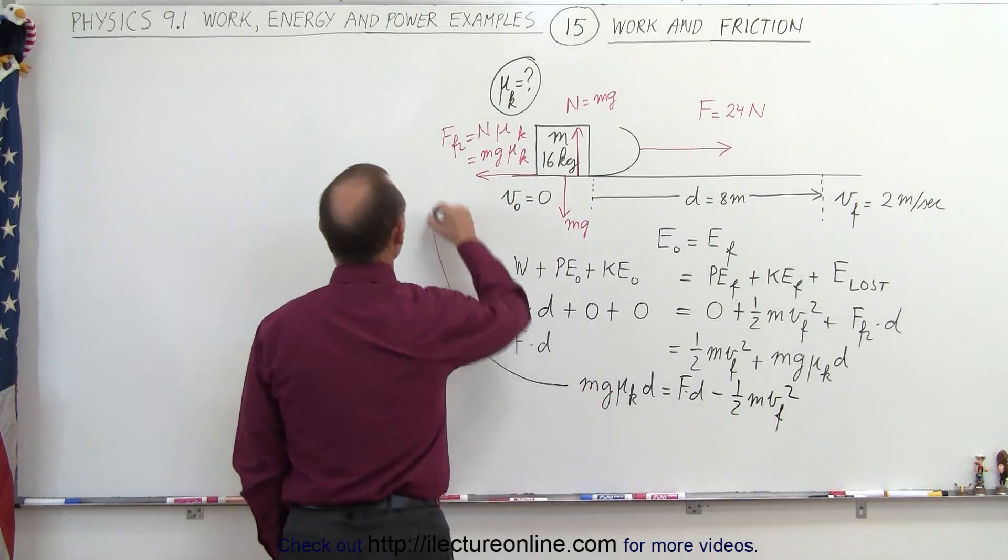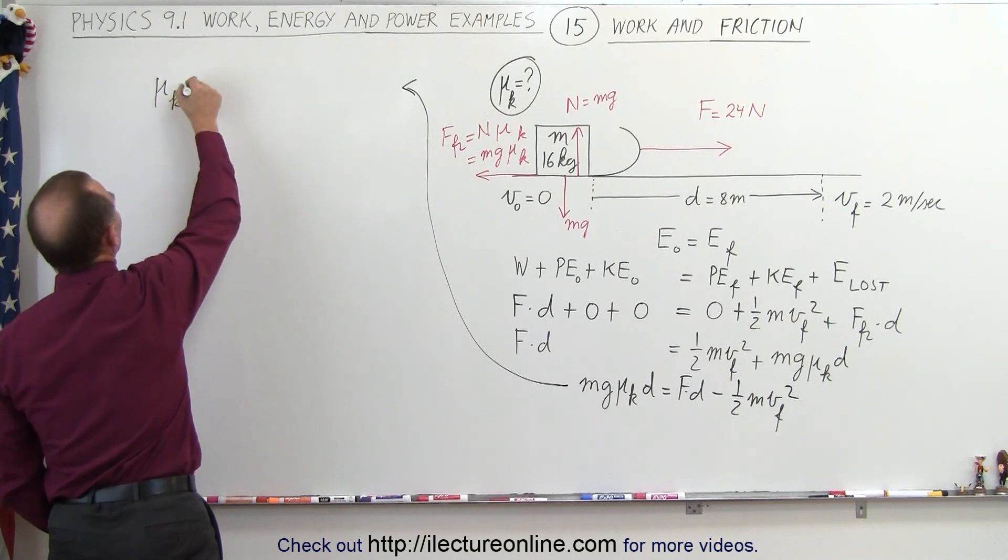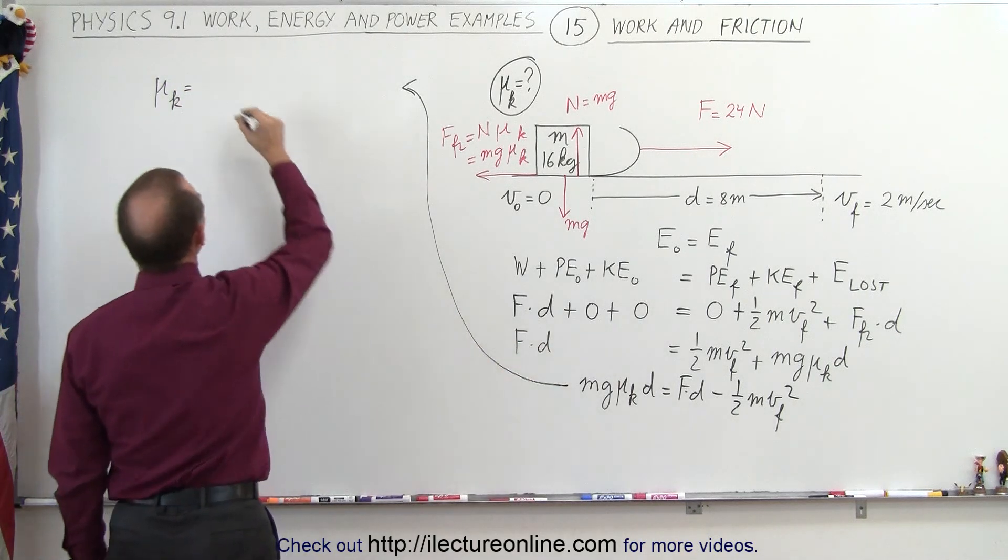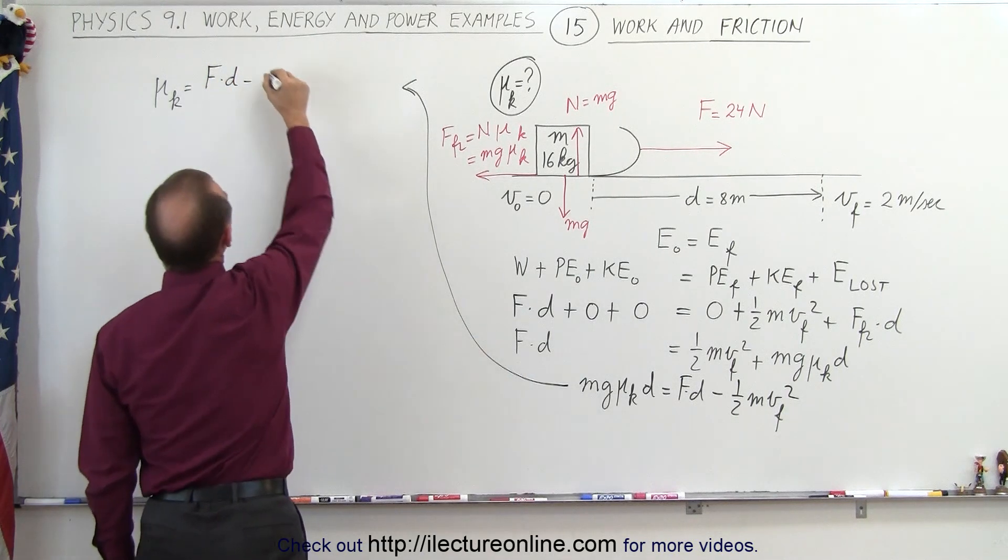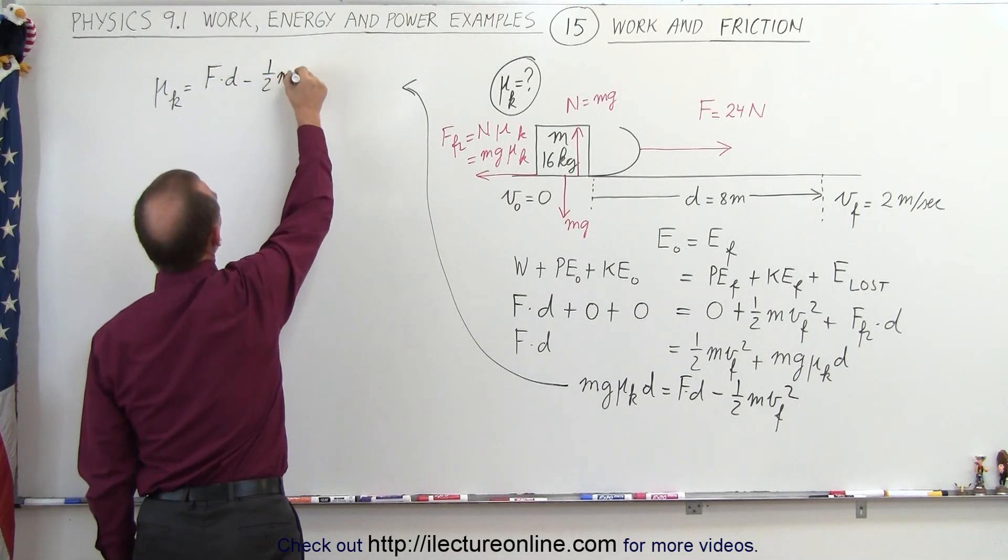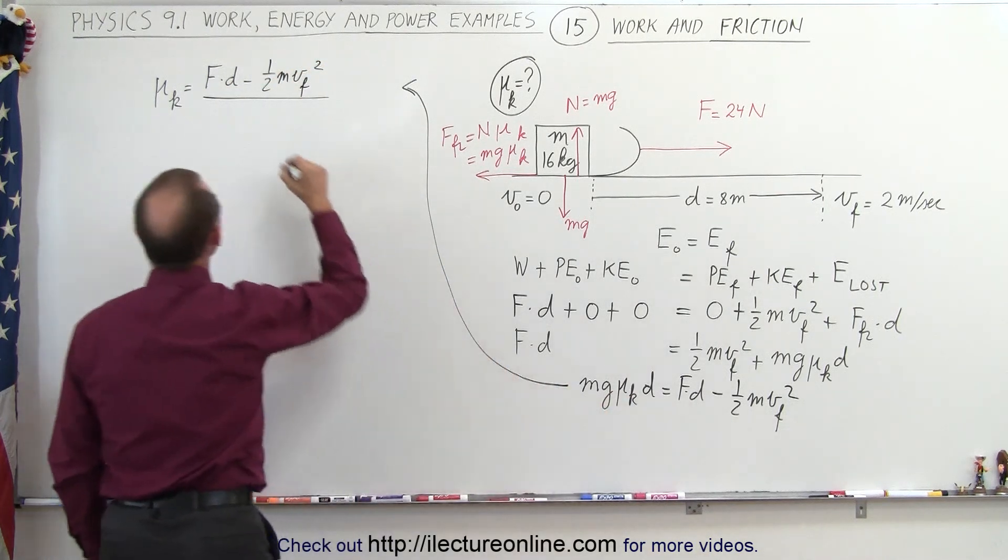And so finally, let me move over this way so we have a little bit more room. I'm going to solve for mu sub k. Mu sub k is equal to the right side of the equation, which is the force times distance minus the final kinetic energy, one half m v final squared, divided by the other coefficients here, which is mgd.